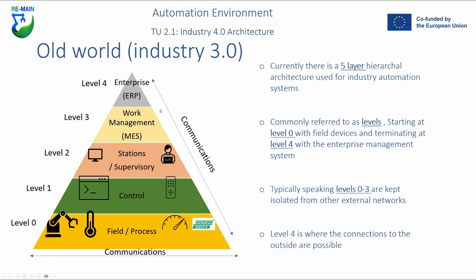The levels are typically kept isolated from other external networks as much as possible, to minimize risk from intrusion or cyber attack and to ensure that the manufacturing process is robust and not compromised. If you do need to connect to the outside world, that generally happens at level four. Communications can go from level to level — level zero to one, one to two, two to three, and three to four — and vice versa. Communications can also occur on the horizontal axis, so anything within level zero can potentially communicate with anything else within level zero.